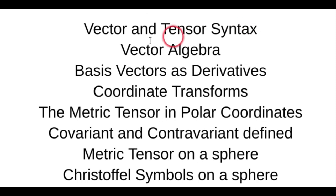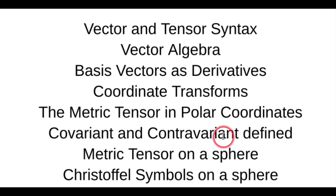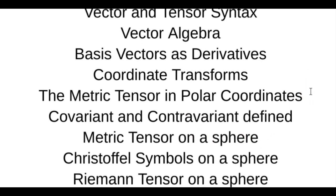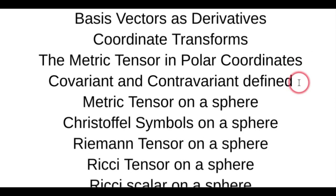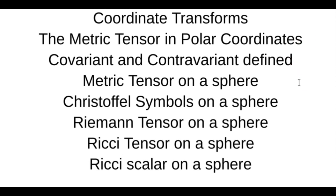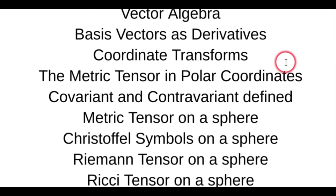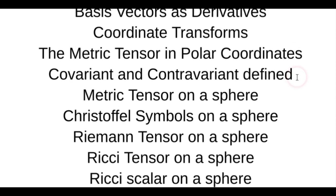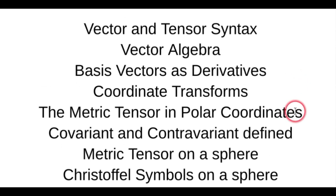I'm starting over and want to tell this as one story: vectors and tensor syntax, vector algebra, basis vectors as derivatives, coordinate transforms, the metric tensor in polar coordinates, covariance and contravariance, metric tensor in spherical coordinates, Christoffel symbols, Riemann tensor, Ricci tensor, and finally the Ricci scalar. Hopefully this will be one continuous story. I hope you enjoy it.